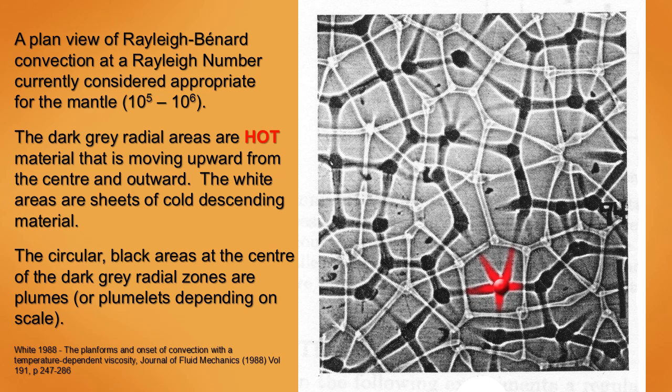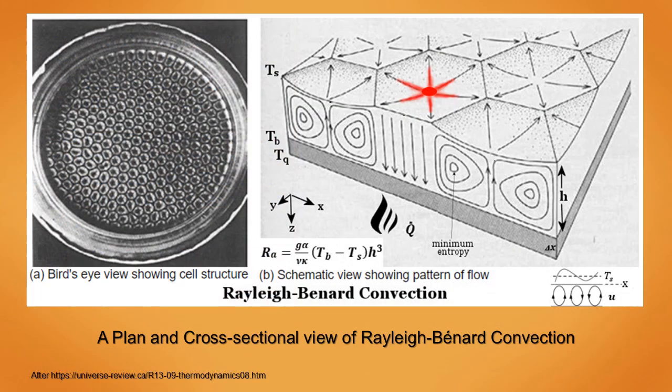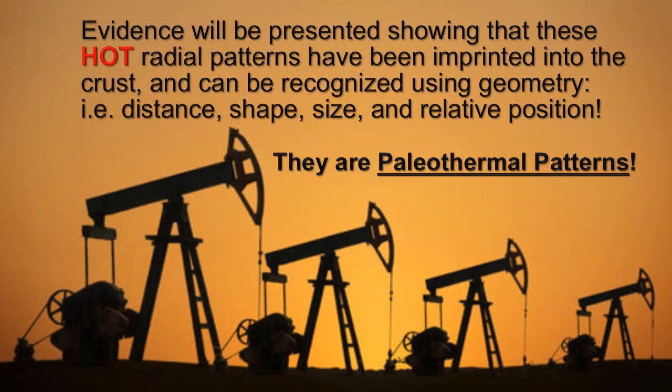The plume in a cell is where you have the greatest amount of heat present for the greatest length of time. Here is both a planned view and a cross-sectional view of Rayleigh-Bernard convection. Presented here is also the equation for the Rayleigh number, a dimensionless number that indicates the transition from conduction to convection. Evidence will be presented showing that the hot radial patterns have been imprinted into the crust from the underlying mantle. And like paleontology and paleobotany — the fossil remains of animals and plants — these are fossil heat patterns or paleothermal patterns.